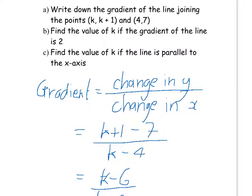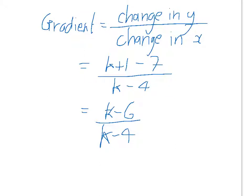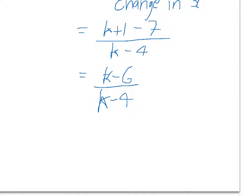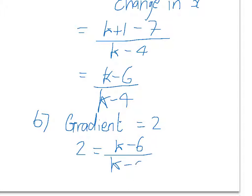We're told to find the value of k if the gradient of a line is 2. That was part A. Part B says we now know what the gradient is, and we want to find out what k is. We're told the gradient is equal to 2. We're going to set what we just found equal to 2. So, 2 equals k minus 6 over k minus 4.